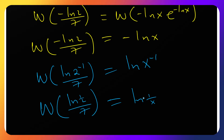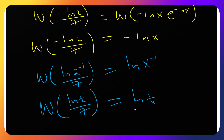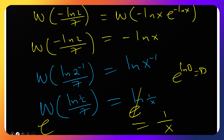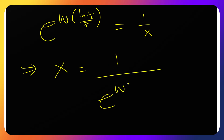The last step is to remove the ln. We raise both sides with e: e^(ln(box)) = box, so the left side of 1/x cancels the ln, leaving 1/x = e^(W(ln(1/2)/7)). Therefore x = 1 / e^(W(ln(1/2)/7)), which is our answer.